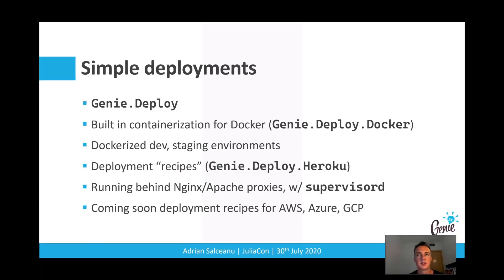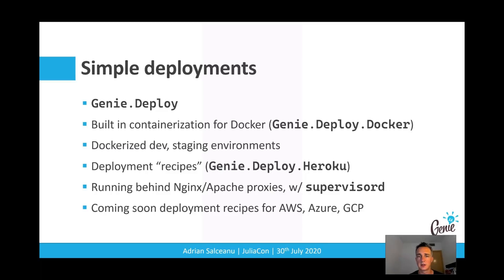Genie makes deployments easy through its deploy module. It provides built-in containerization support for Docker with the Genie deploy Docker module, making it easy to set up development environments or use Docker for production deployments. It has also been tested to run well behind Nginx and Apache proxies.